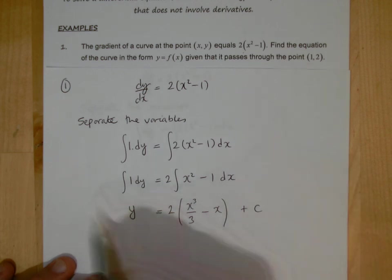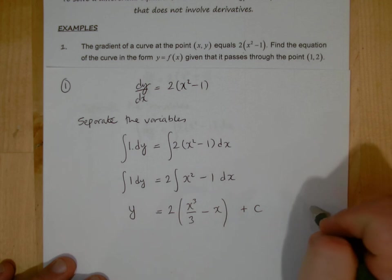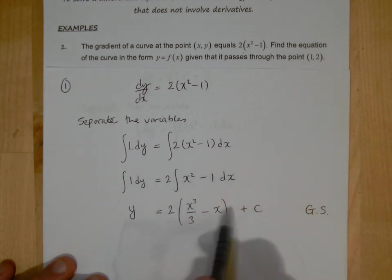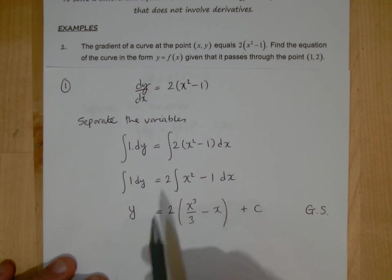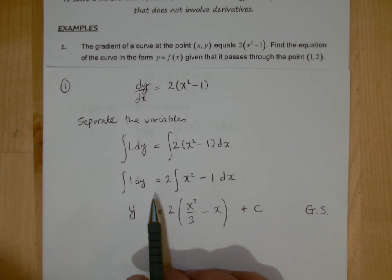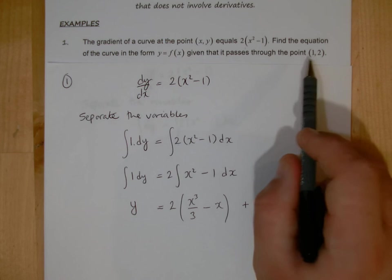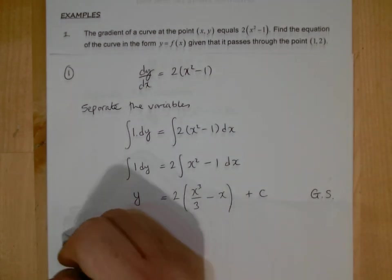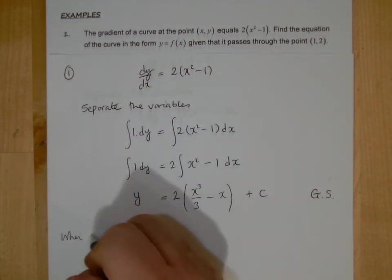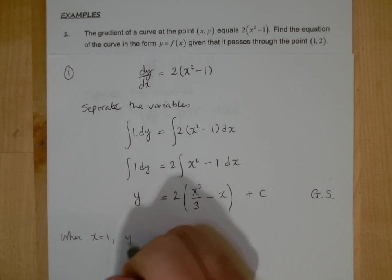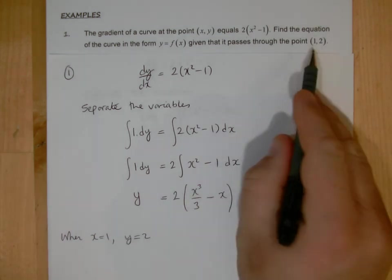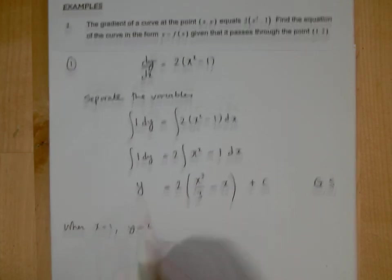Now what we've got here is known as a general solution, a general solution, because this could apply to many situations, because we don't know what that constant is, so it's a general solution in general, so it can apply to lots of situations. But we are given boundary conditions, we are saying look, when x is equal to 1, y is equal to 2, because it goes through that point, so we can substitute them in.